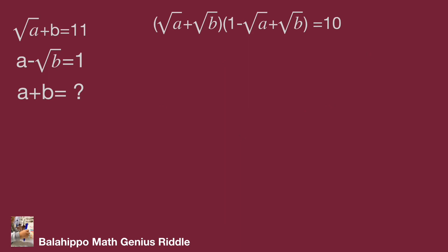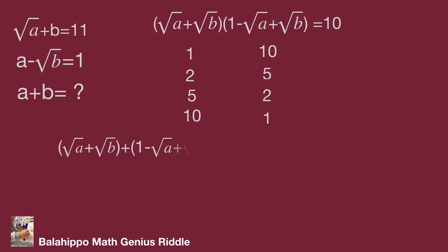The quantity (√a + √b) could be 1, 2, 5, or 10, and the corresponding quantity for the other factor could be 10, 5, 2, or 1. When we sum these two quantities, the sum could be 11, 7, 7, or 11.